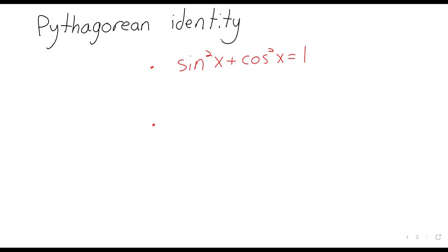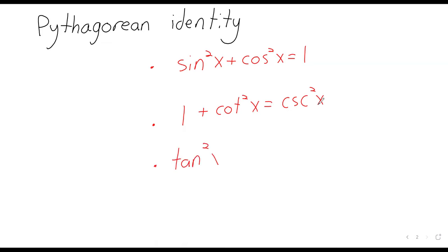There are two other Pythagorean identities: 1 + cot²(x) = csc²(x), and tan²(x) + 1 = sec²(x). So the Pythagorean identity is sometimes pluralized, and you can think of there being three of them. Although if you just say 'the Pythagorean identity,' everyone will assume you're talking about that first one.